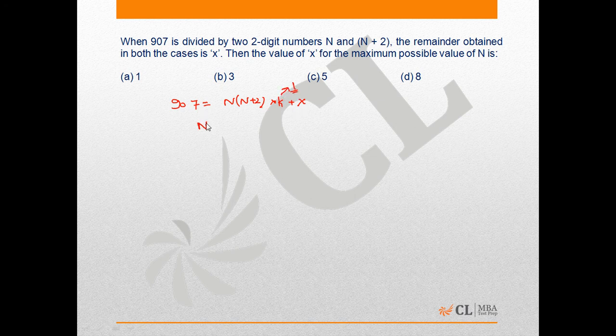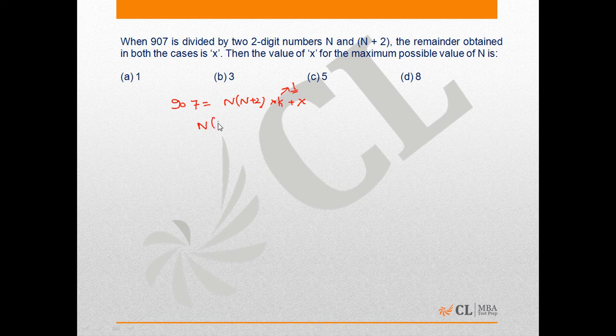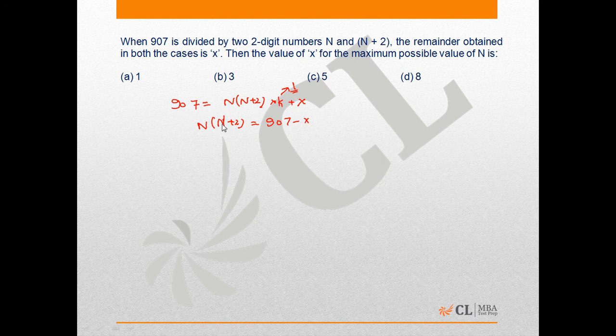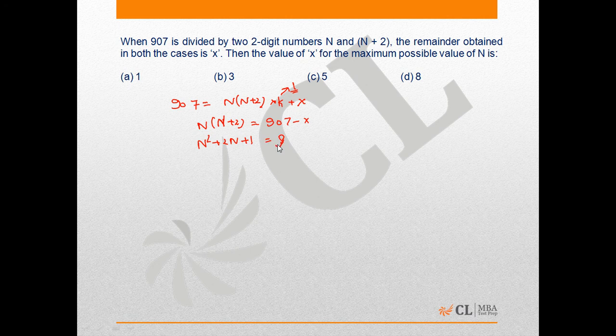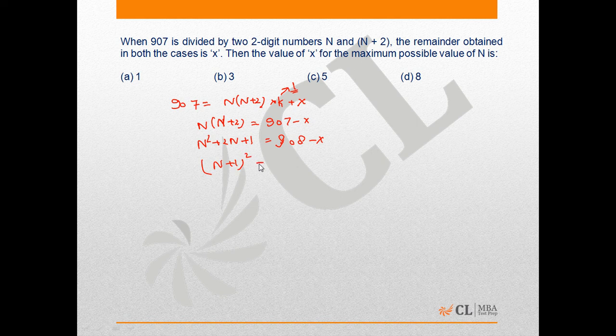So N×(N+2) equals 907 minus x. This can be written as N² + 2N, and you can add 1 here and subtract 1 here. It becomes 908 minus x. So (N+1)² equals 908 minus x.